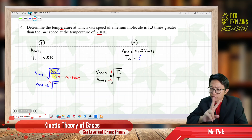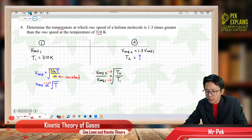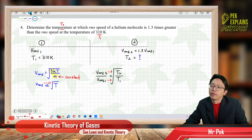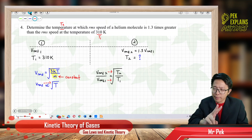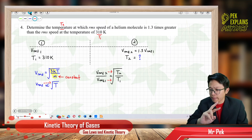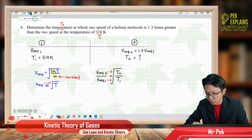We have two different temperatures. The given temperature I put as T1, and the one I need to find I put as T2. So two different temperatures — temperature is not the same, temperature is changing. We have temperature 1 and temperature 2.